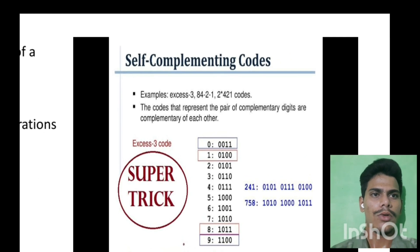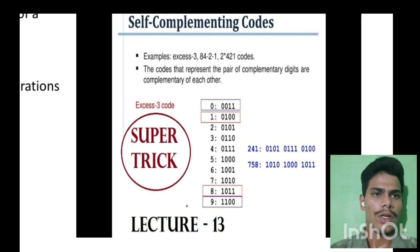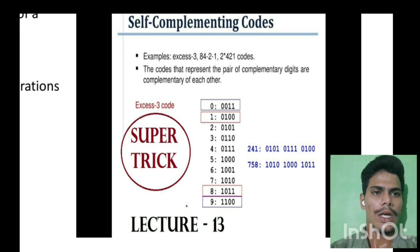Example. XS3 code. 84212. 2-4-2-1 codes. The code that represents the pair of complementary digits or complementary of each other. Lecture 13.